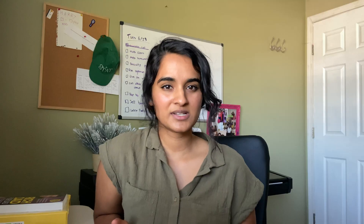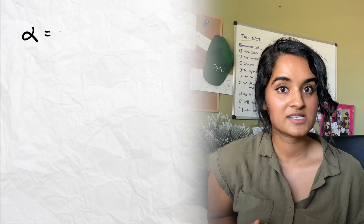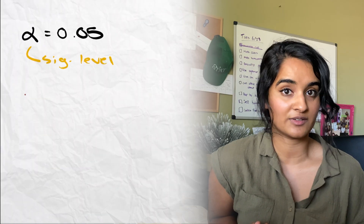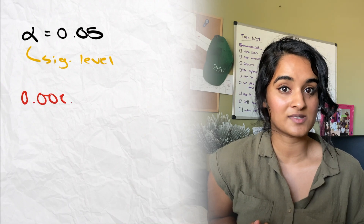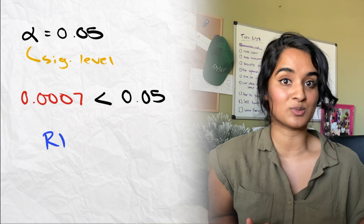There should be three zeros after the decimal point, so the p-value is 0.0007. The p-value tells us how much evidence we have against the null hypothesis. We want a really small p-value, because the smaller our p-value, the more likely we are to reject our null hypothesis. If the p-value is less than the significance level, we reject the null hypothesis. The default significance level is 0.05 unless your teacher tells you differently. Our p-value of 0.0007 is less than 0.05, so we can reject the null hypothesis.